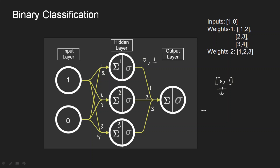In the case of the step function, we transformed whatever values we got into either 0 or 1. Now I need to transform any value from minus infinity to plus infinity into a value between 0 and 1. Is there a function that does exactly that? The sigmoid function does exactly that.